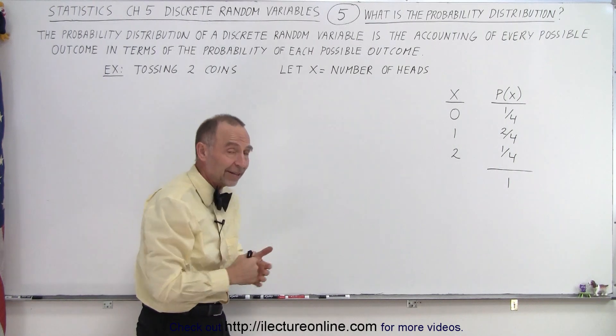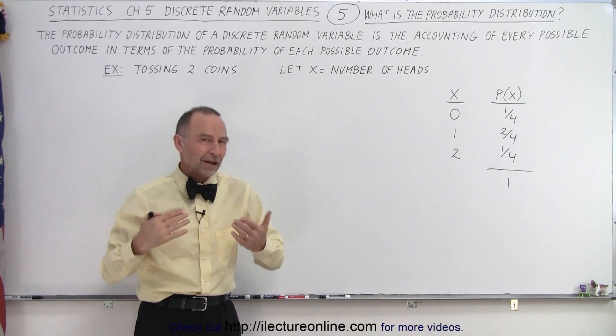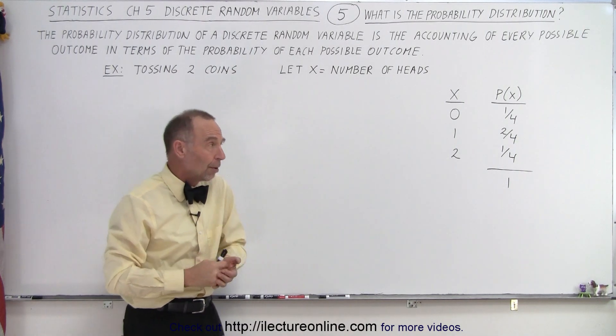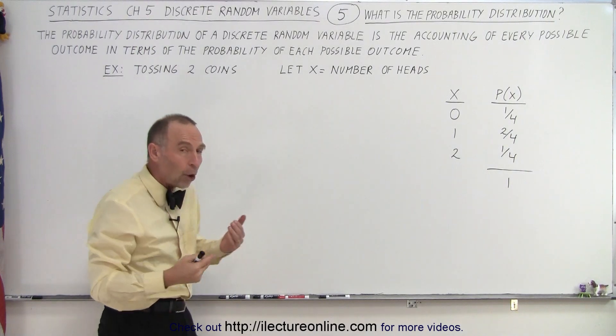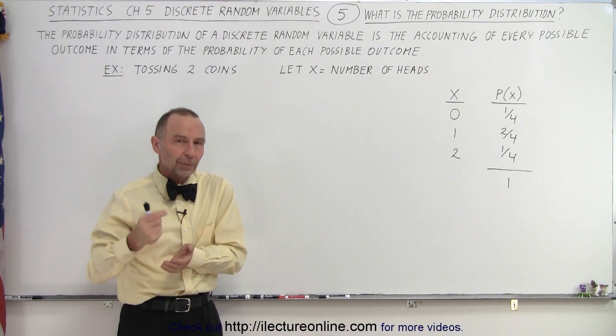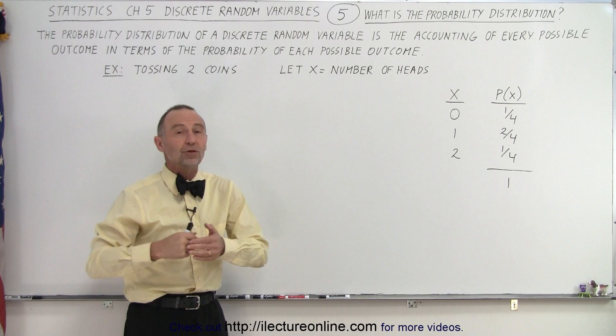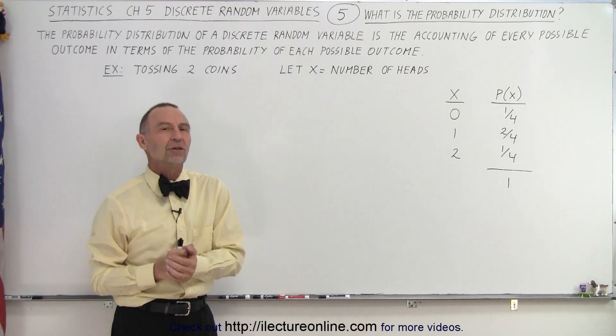Now, of course, that's a very simplistic example, and we'll learn how to graph those probability distributions. But essentially, if you list out all the possible outcomes and the probability of each of those outcomes, you have a probability distribution.